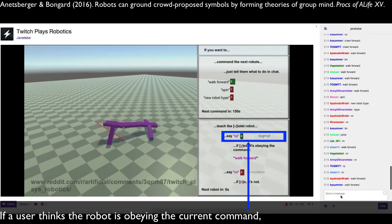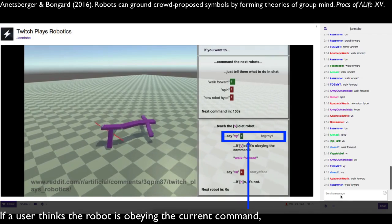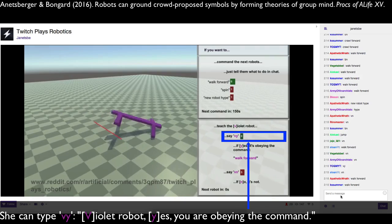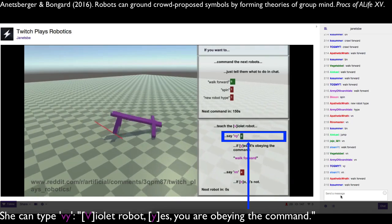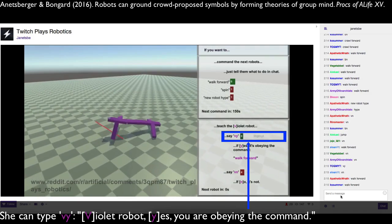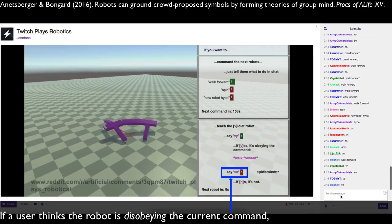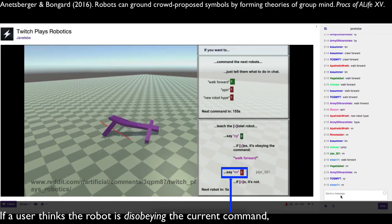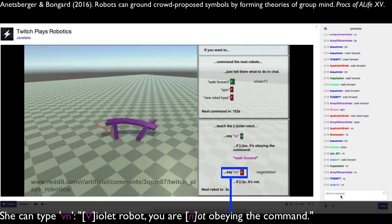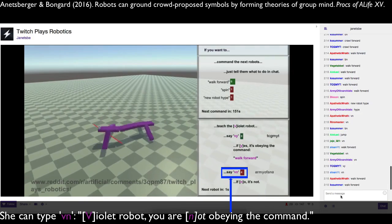If a user thinks the robot is obeying the current command, she can type VY. Violet robot, yes, you are obeying the command. If a user thinks the robot is disobeying the current command, she can type VN. Violet robot, no, you are not obeying the command.